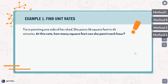The problem says: Tia is painting one side of her shed. She paints 36 square feet in 45 minutes. At this rate, how many square feet can she paint each hour? We need to find the unit rate — how many square feet can she paint in one hour. But we don't have hours in our problem; it says 36 square feet in 45 minutes. So the first thing we need to do is convert those 45 minutes into hours.